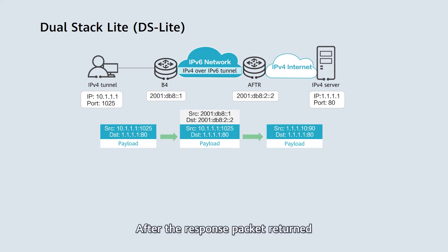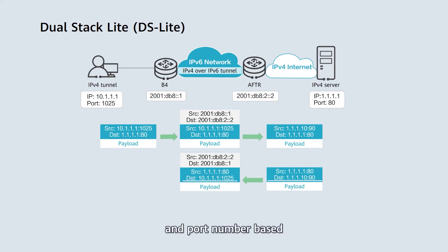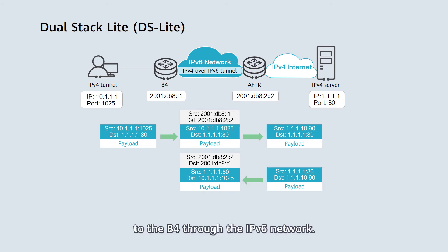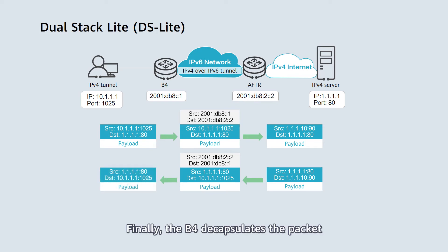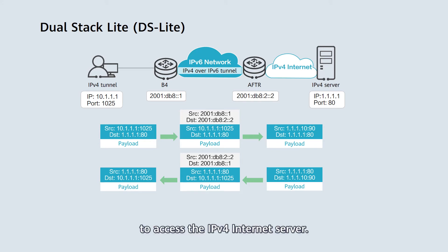After the response packet returned by the IPv4 server reaches the AFTR, the AFTR translates the public network address and port number into the private network address and port number based on the NAT mapping table, and adds the IPv6 packet header. The packet is then forwarded to the B4 through the IPv6 network. Finally, the B4 decapsulates the packet and sends it to the IPv4 user. In this way, the IPv4 user can use a private network address to access the IPv4 internet server.